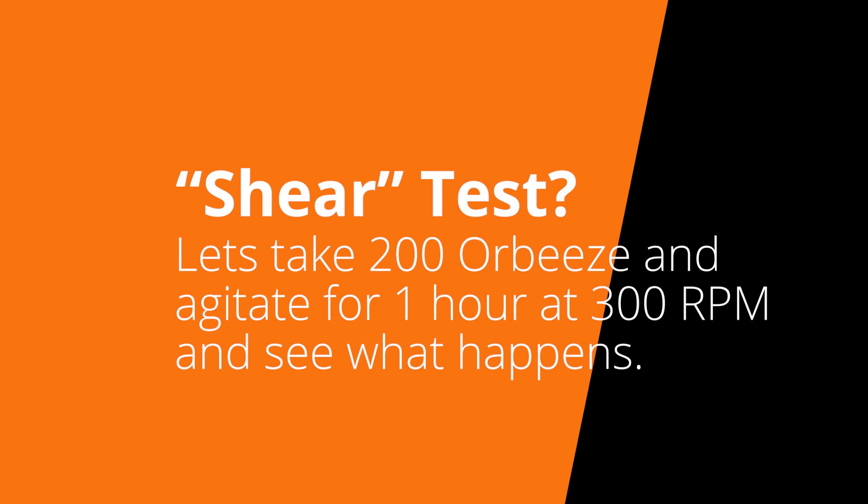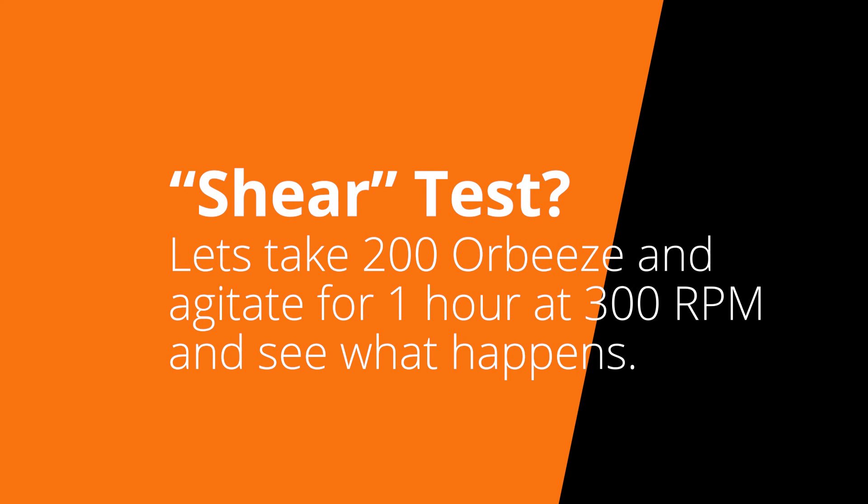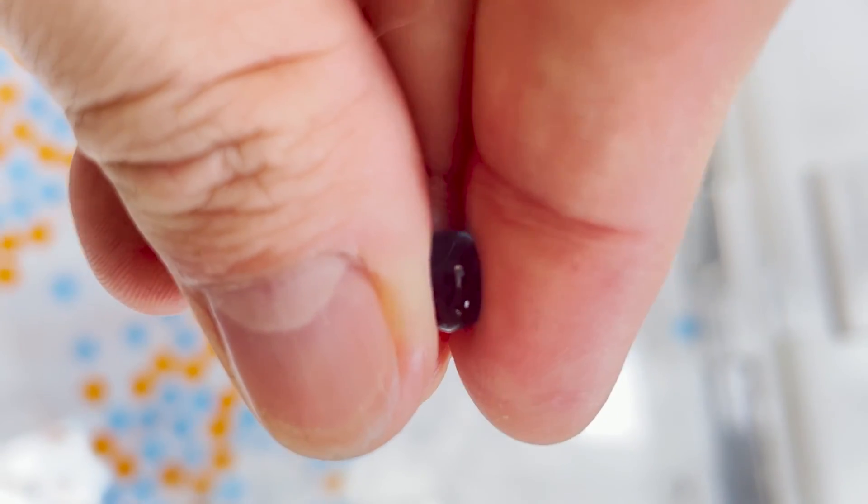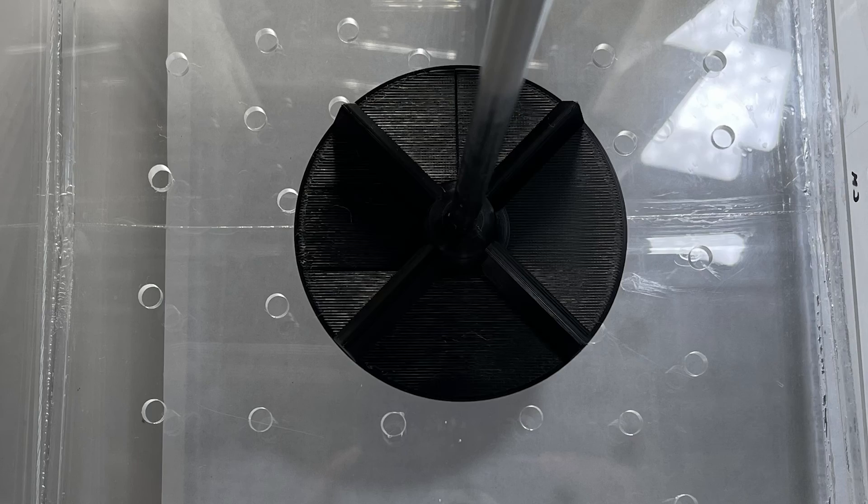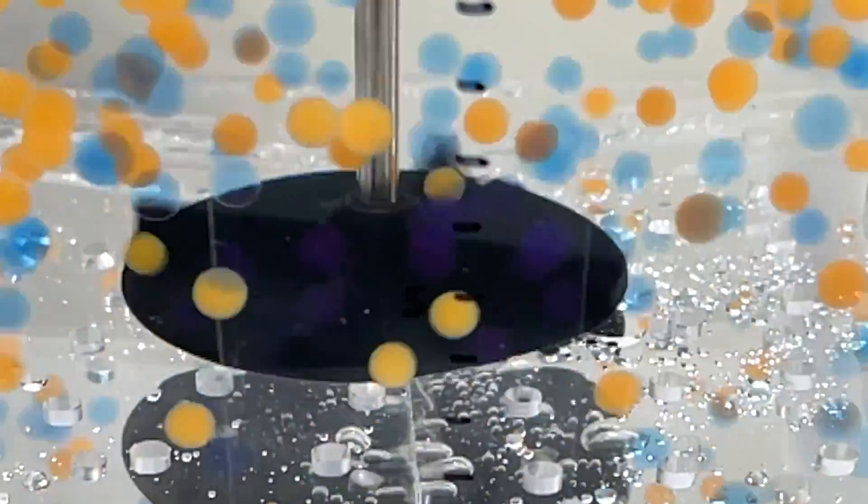One dictionary definition of shear is a strain in the structure of a substance produced by pressure when its layers are laterally shifted in relation to each other. In botanical trichome extraction, this can be seen when the agitator cuts biomass or trichomes due to the pressure it exerts as it rotates and collides with particles.